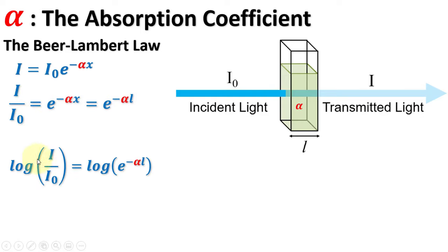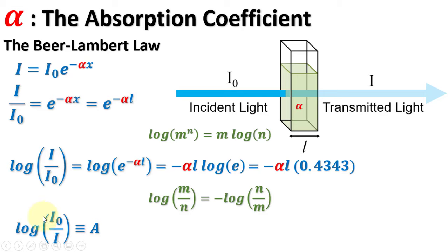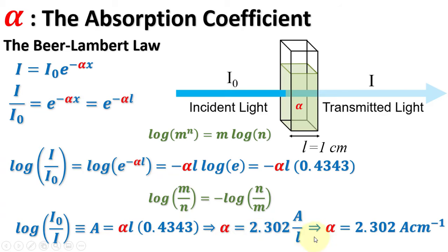By taking the log of both sides and utilizing this logarithmic relation, this equals minus alpha L log E. The log E value is 0.4343. Log I_0 over I is defined as the absorbance A. So applying this logarithmic relation, the negative sign is cancelled on both sides and the absorbance equals alpha L times 0.4343. Rearranging the terms and putting L equal to 1 cm, the internal dimensions of a standard cuvette.